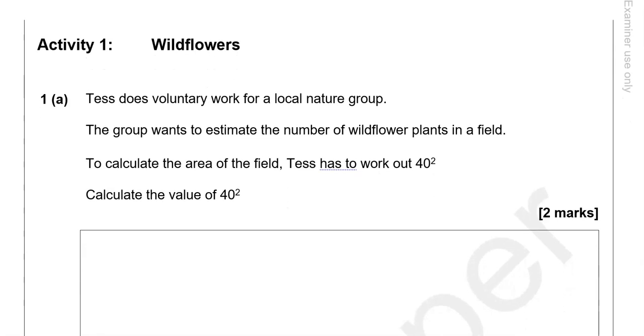Activity 1: Wildflowers. Tess does voluntary work for a local nature group. The group wants to estimate the number of wildflower plants in a field. To calculate the area of the field, Tess has to work out 40 squared. Calculate the value of 40 squared.